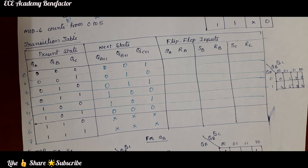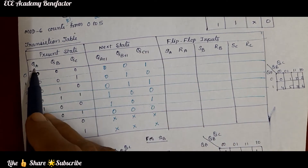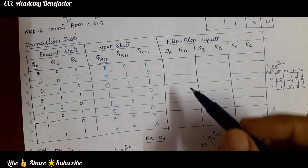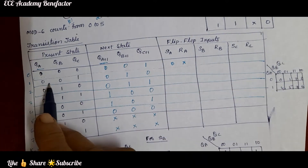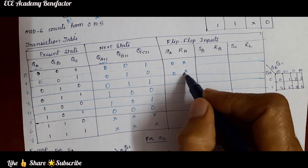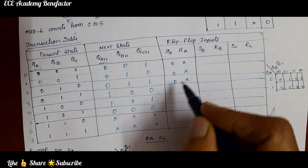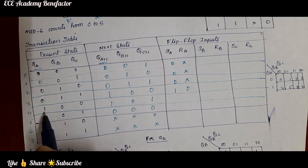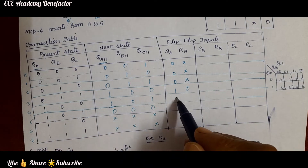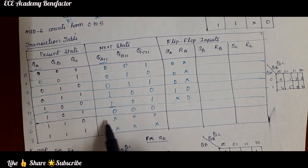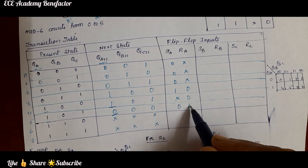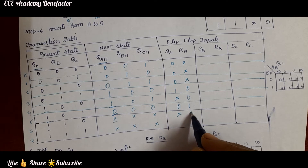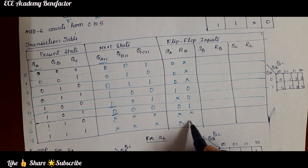Now we need to write the flip-flop inputs. To write SA and RA, we look at QA and QA+1. For QA=0, QA+1=0 it is 0x; repeated for rows 0,1,2,3. For QA=1, QA+1=0 (row 4) it is 10. For QA=1, QA+1=1 (row 5) it is x0. For QA=1, QA+1=0 (row 6) it is 01. For rows 6 and 7 (do not care states) it is do not care.